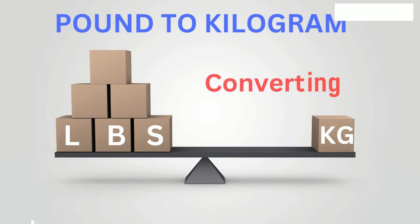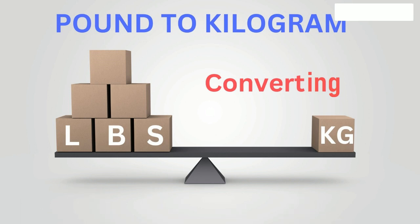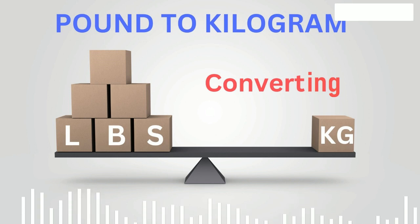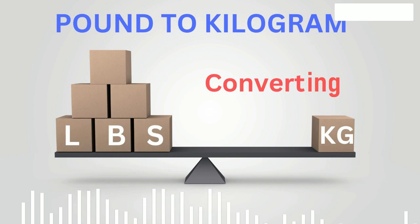Step 1: To convert the weight expressed in kilograms to pounds manually, multiply it by 2.2046 in your head, in a column, or on a calculator.